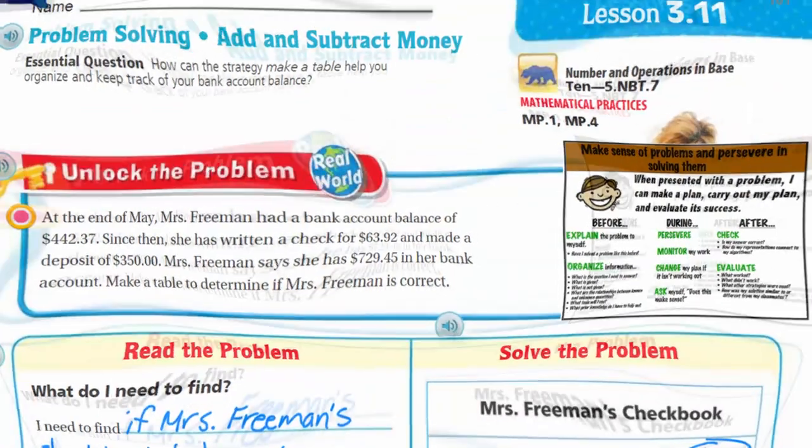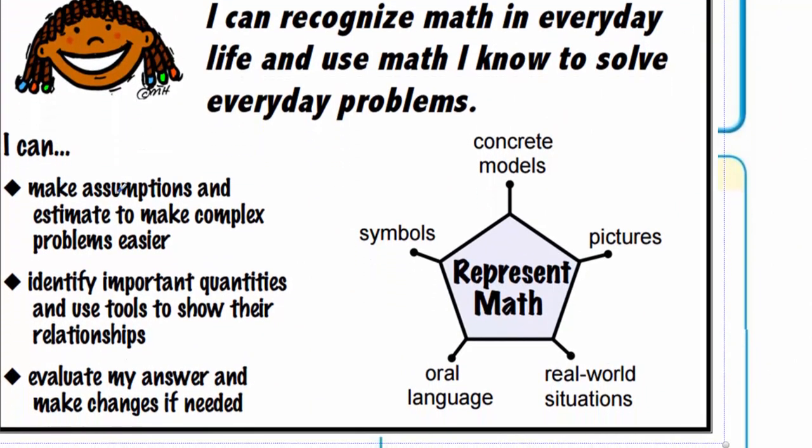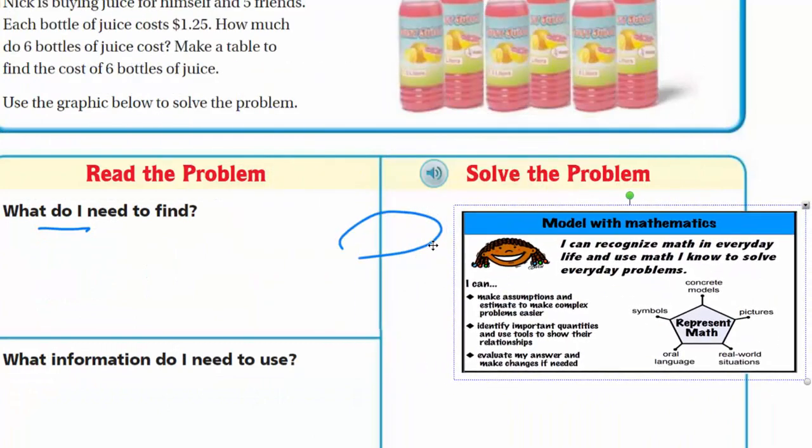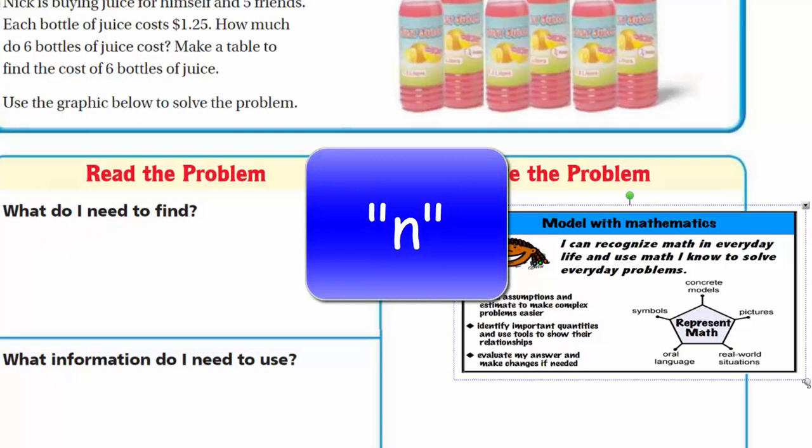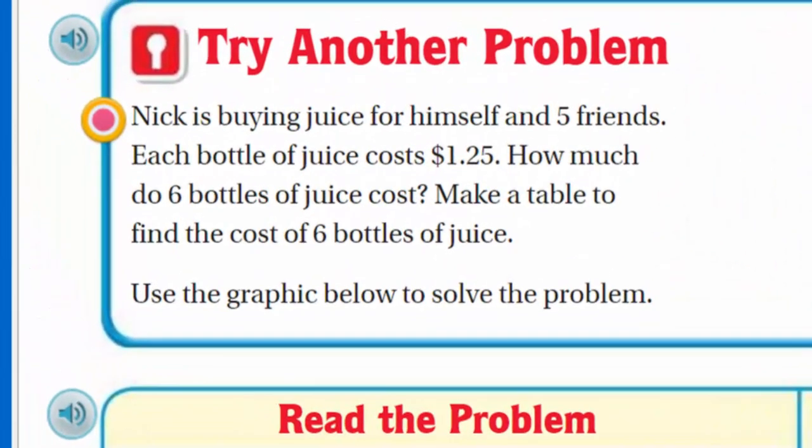Well, let's go ahead to the next page. And where's my little page turner thingy? There we go. So here, whoa, here's our model with mathematics. I wanted to have this up so you can see that this is what we basically did. We used a table as the way of modeling it. There's different ways. You have symbols, you have concrete models, you have different things you can use. It says here I can recognize math in everyday life and use math I know to solve everyday problems, kind of what we did there in that sample with Mrs. Freeman. We make assumptions so we can estimate to make maybe complex problems easier, identify important quantities, use the correct tools that will help us to show how they're connected, evaluate my answer and make changes if needed. Let's go ahead and shrink this. I guess I can get rid of that and that. Goodbye. Thank you very much. And turn this into a little tiny white square. Oh my goodness, where'd it go? It's gone. It's like it disappeared.